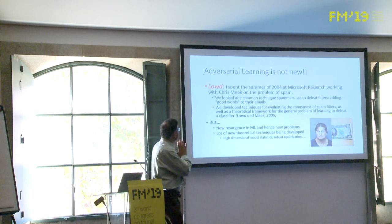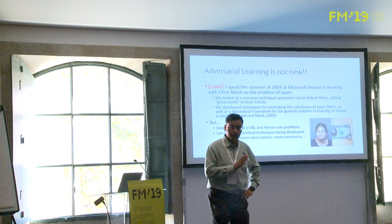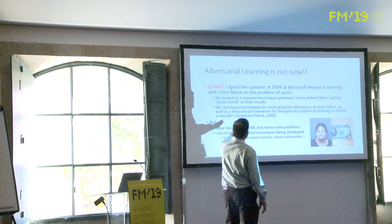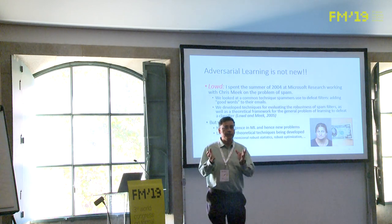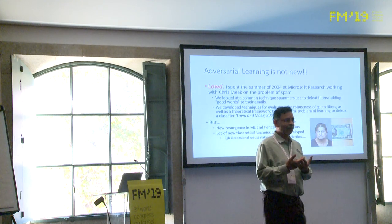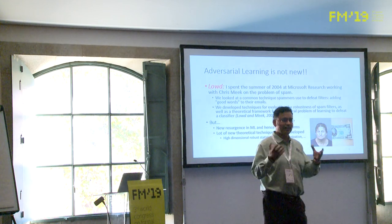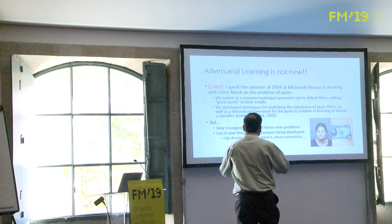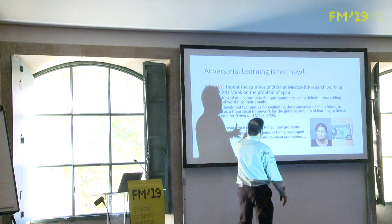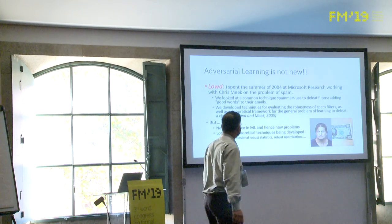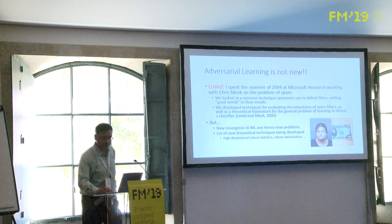Adversarial learning is not new — it had been studied quite a bit by Lowd and me in 2005, but in the context of spam detection. You might have seen spam with Shakespeare quotes and such — they're just trying to test the machine learning spam detection. But with deep neural networks ruling the world, it has taken on a new life.